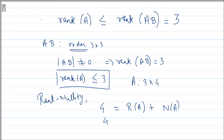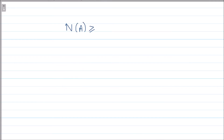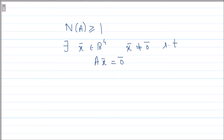So we have 4 = rank(A) + nullity(A). Since rank(A) ≤ 3, we get 4 ≤ 3 + nullity(A), which gives nullity(A) ≥ 1. This means there exists a non-zero vector x in ℝ⁴ such that Ax = 0.